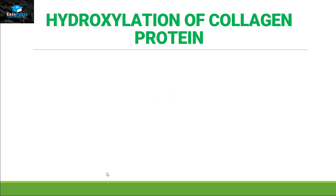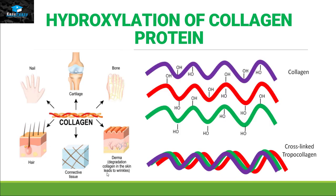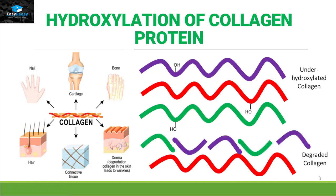Hydroxylation of collagen protein: collagen is the main structural protein in our body, present in our nails, cartilage, bone, skin, connective tissue, and hair. Collagen has three different amino acids that are highly modified with a hydroxyl group. When the hydroxyl group is attached to each polypeptide chain, collagen can convert itself into the tropocollagen or cross-linked form to perform its function. But if collagen does not get modified with the hydroxyl group, it will not form proper collagen — instead it will get degraded, affecting our skin, nails, hair, or any part where the degraded collagen is present.